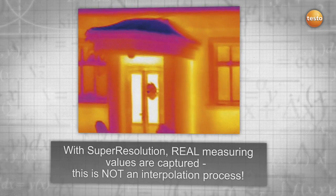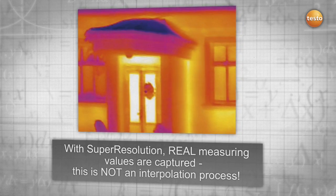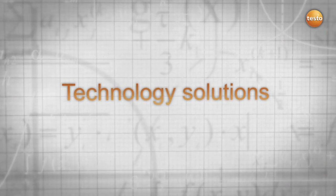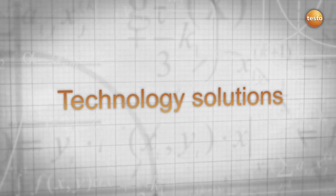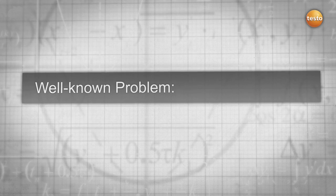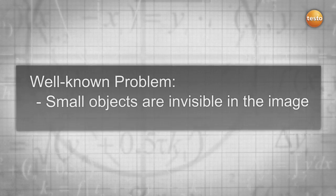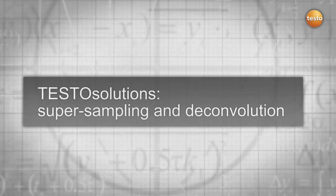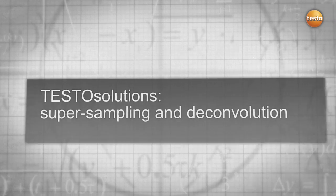The problem is well known: small objects are invisible in the image, and even if visible, the measured values are not correct. The Testo solution: super sampling and deconvolution. By using multiple images, super sampling, and complex mathematics deconvolution, you get more information out of your thermal images.